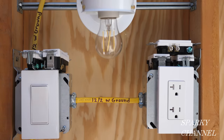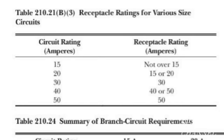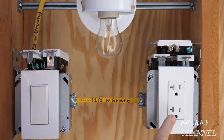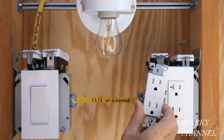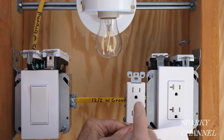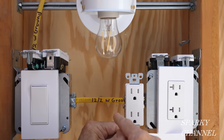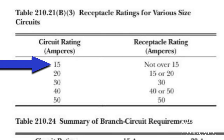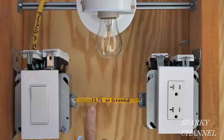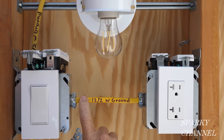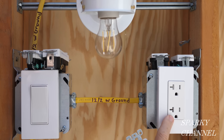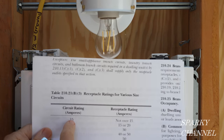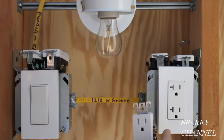The 2020 NEC code, section 210.21B3, covers receptacle ratings for various size circuits. This is a 20 amp receptacle and this is rated at 15 amp. The table shows circuit rating in amperes: when the circuit is 15 amps, you're not to use a receptacle over 15 amps. So if this was a 14-2 with ground on a 15 amp circuit breaker, I could not use this 20 amp receptacle.